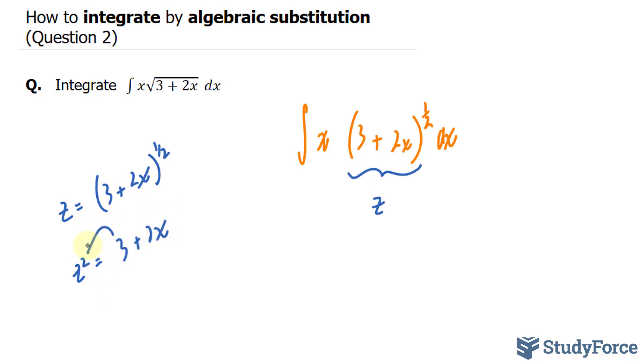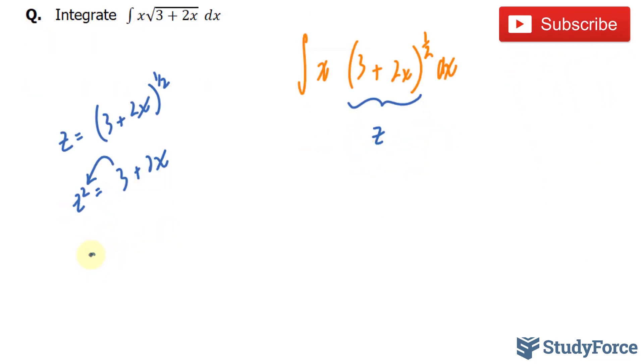Subsequently, we'll take this 3, bringing it over. Giving us z to the power of 2 minus 3 divided by 2 equals x.